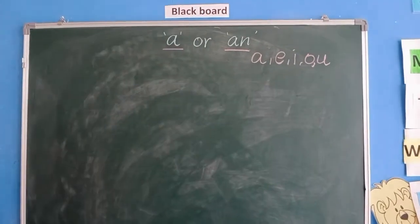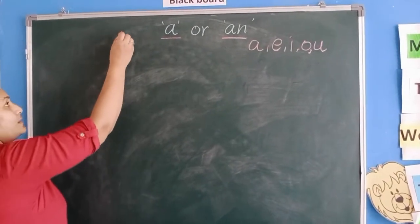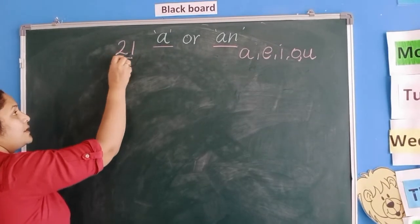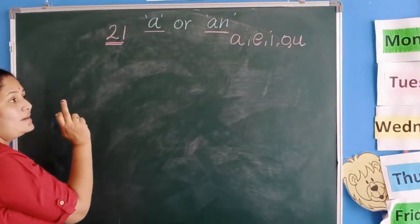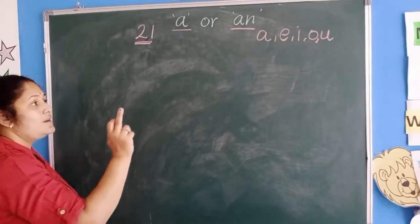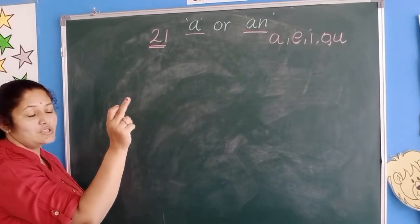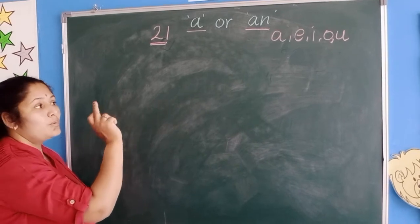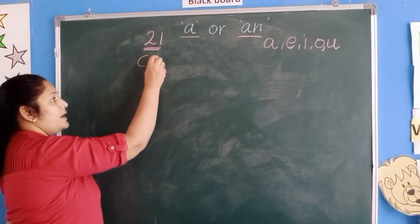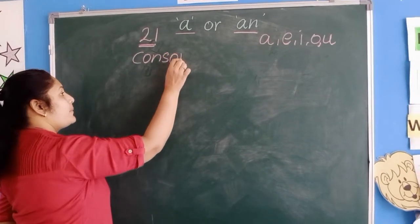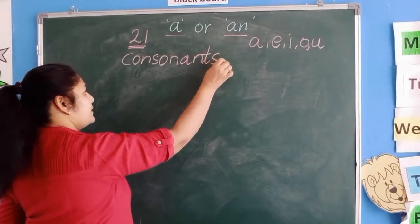And which are the consonants? How many consonants are there? There are 21 consonants. All the other letters besides the vowels are consonants, right? B, C, D, F, G — the whole alphabet, if you count, they are called consonants.